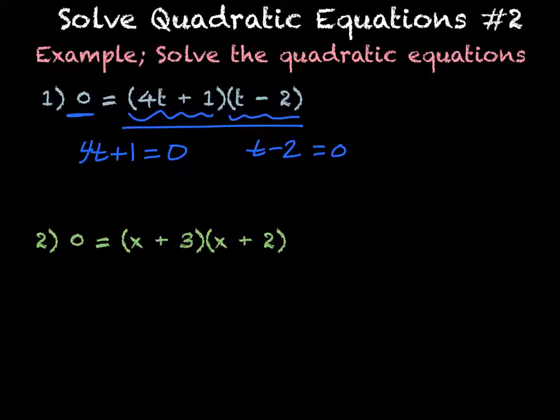Then I just have to solve for t, so I'm going to subtract 1 from both sides, leaving me with 4t = -1, then I divide by 4. So what I have would be t = -1/4.